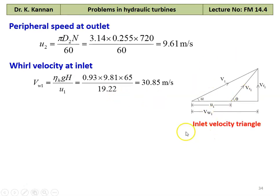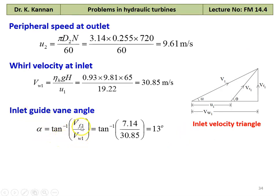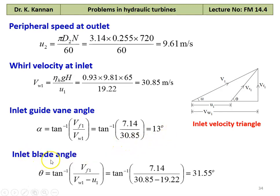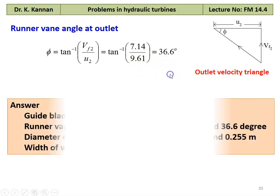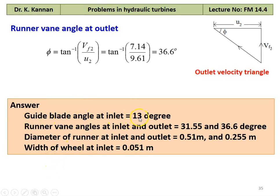Referring to the inlet velocity triangle of the Francis turbine, inlet guide vane angle alpha equal to tan inverse of Vf1 divided by Vw1, which is tan inverse of 7.14 divided by 30.85 equal to 13 degrees. Inlet blade angle theta equal to tan inverse of Vf1 divided by (Vw1 minus U1), which is tan inverse of 7.14 divided by (30.85 minus 19.22) equal to 31.55 degrees. Referring to the outlet velocity triangle, runner vane angle at the outlet phi equal to tan inverse of Vf2 divided by U2, which is tan inverse of 7.14 divided by 9.61 equal to 36.6 degrees. The answer to the problem: guide blade angle at the inlet 13 degrees, runner vane angle at the inlet 31.55 degrees and at the outlet 36.6 degrees, diameter of the runner at the inlet 0.51 meter and at the outlet 0.255 meter, width of the wheel at the inlet 0.051 meter.